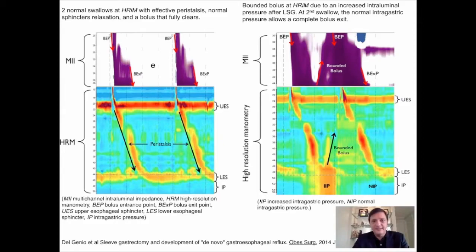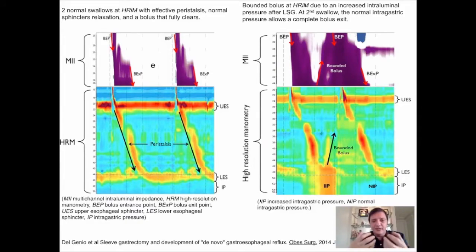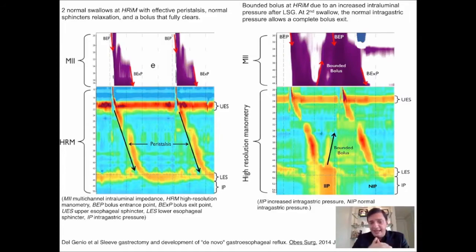And this increase in pressure with a weak spot like the His angle will keep the chronicity — keep the leak alive. So what we have in front of you right now is a very interesting chart.